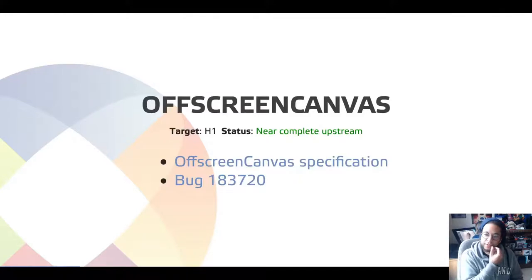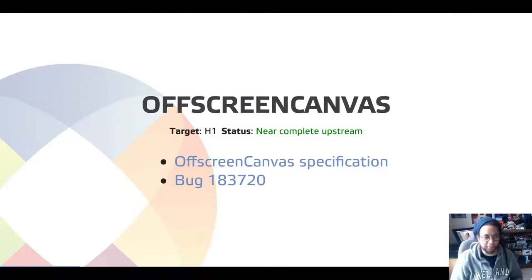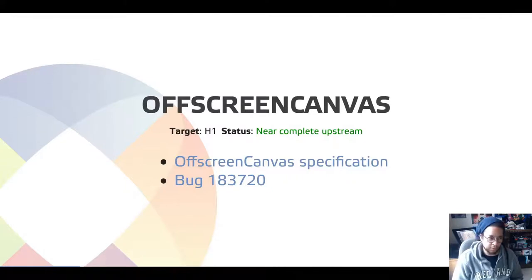First, off-screen canvas. Off-screen canvas is an API that allows you to use canvas in worker threads, either headlessly or asynchronously outputting to a DOM canvas element. You can imagine that being used for example for an efficient mapping implementation that doesn't block the main thread. Similarly, any kind of multi-threaded rendering that you don't want to block user interaction, off-screen canvas can help with.